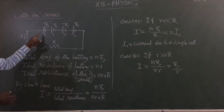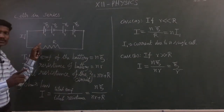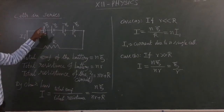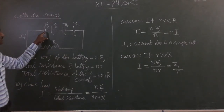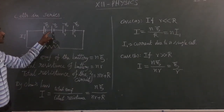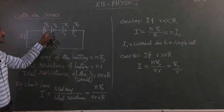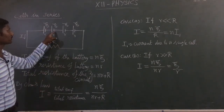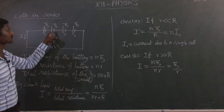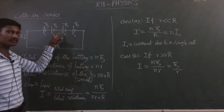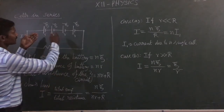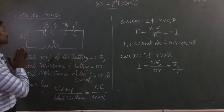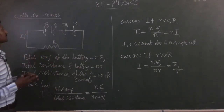Series means: in a cell we have a positive terminal and a negative terminal. The first cell's negative terminal is connected to the second cell's positive terminal. Like that, the negative terminal of the second cell is connected to the positive terminal of the third cell — that is the series connection, cells in series.